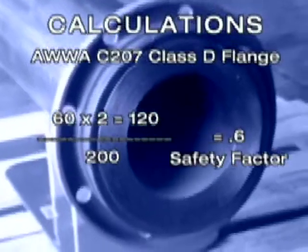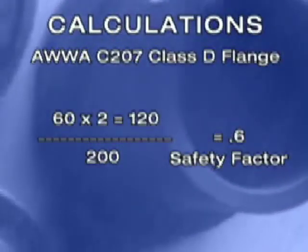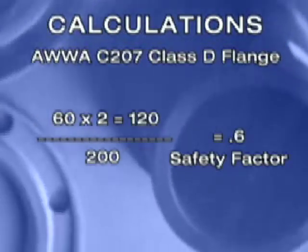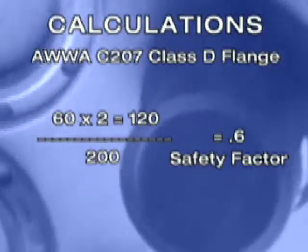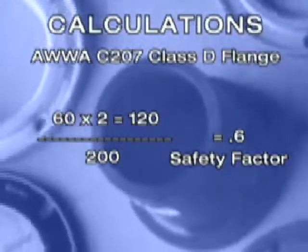If you were to use the AWWA C207 Class D flange with an actual pressure rating of 60 PSI, you would yield a safety factor of 0.6. Now you can make a decision about which safety factor is more appropriate for your application.